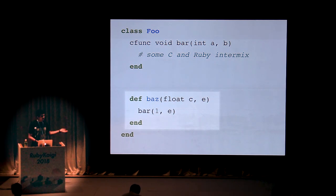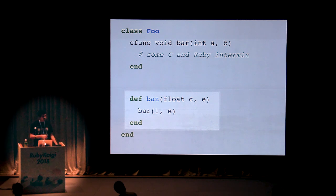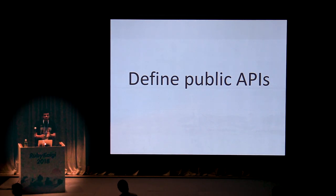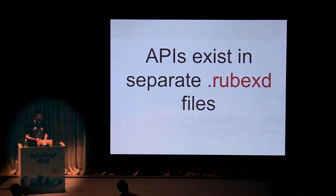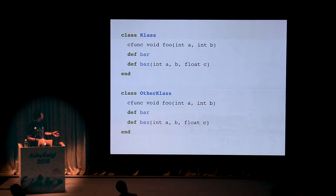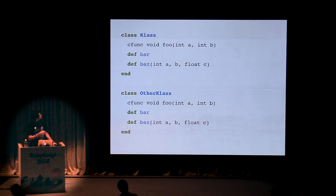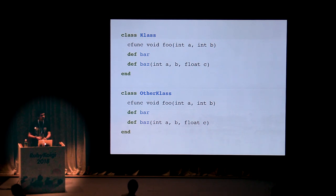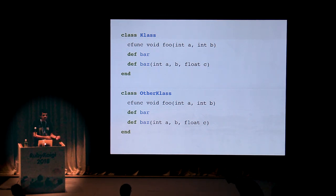Baz is a normal Ruby method that will be accessible from another Ruby script, accepting a float c which will be implicitly converted from a Ruby object. This functionality allows you to define public APIs for your C extensions. These public APIs rest in a separate file called a Rubex extension file (.rubexd), and this is what a sample file looks like. Say you have a class and another called OtherClass — you simply define the names of the functions inside this class, put it inside a .rubexd file, and when you have another C extension that also uses Rubex, you can simply require this file and use these functions just like any other Ruby API.